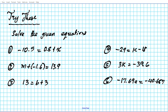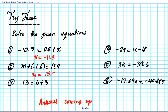Hopefully you had a chance to try out the problems. The answers are: 1) x equals negative 11.3; 2) m equals 15.5; 3) v equals 10; 4) k equals negative 11; 5) k equals negative 13.2; and 6) a equals 2.3.